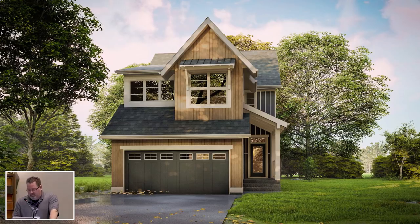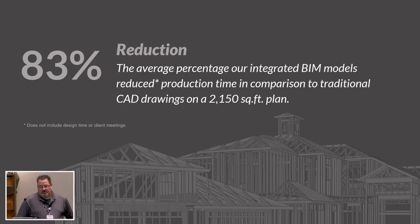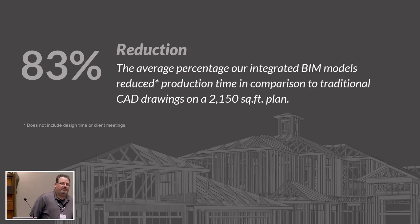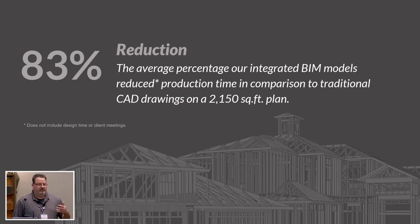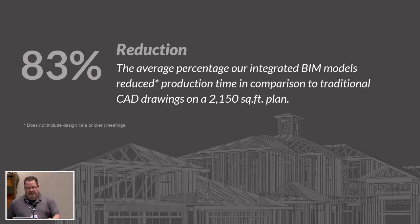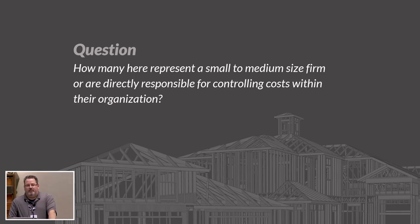On a 2,150-square-foot house we were able to reduce average production time by 83%. But I want to be clear: you have to build up your assets and systems first in order for that to happen — there's significant pre-work involved. We'll show you some of the numbers at the end as to what it took to get there.